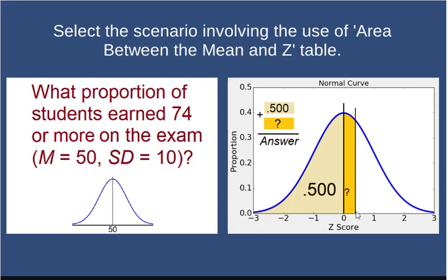Imagine there is a z right here. Area between the mean and z is highlighted in darker yellow. Area beyond z would be this area in white.